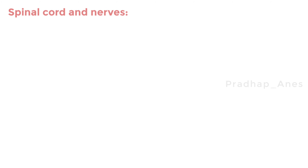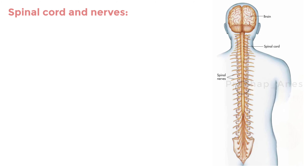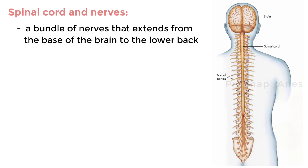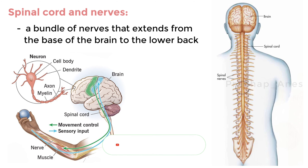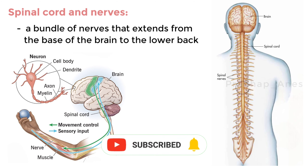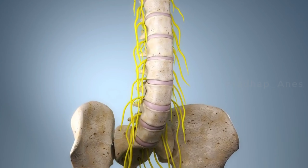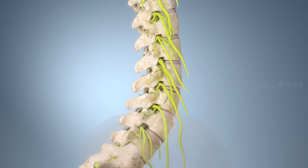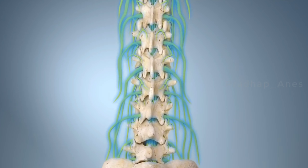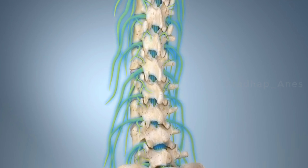The spinal cord and nerves. Within the spinal canal lies the spinal cord — a bundle of nerves that extends from the base of the brain to the lower back. The spinal cord serves as a communication pathway, transmitting sensory information from the body to the brain and transferring motor commands from the brain to the muscles. Pairs of spinal nerves emerge from spaces between the vertebrae, carrying messages to and from different regions of the body.